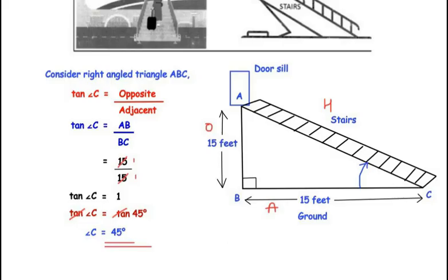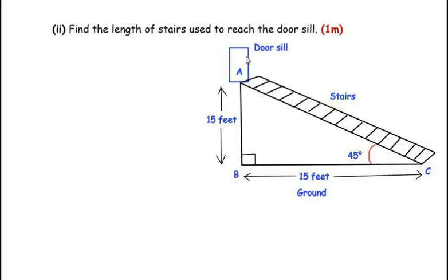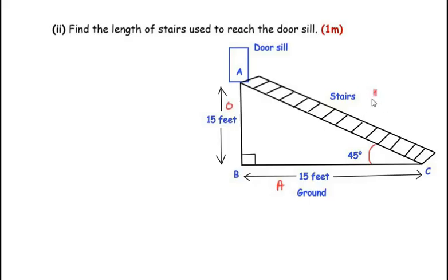Now for question 2: find the length of stairs used to reach the door sill. Using the figure with angle C = 45°, we need to find AC, which is the hypotenuse. The opposite side AB = 15 feet and AC is opposite to 90°, so AC is the hypotenuse. BC is the adjacent side. Since we need to find the hypotenuse and the opposite side is known, we use the sine ratio.